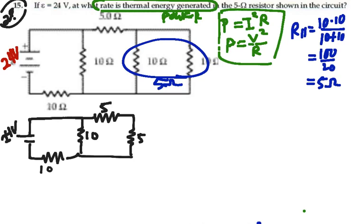Alright, let's do the series combination, add them together. We get 10 ohms for that, so now our circuit looks like this.